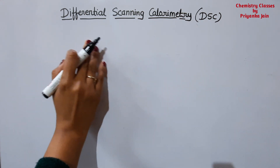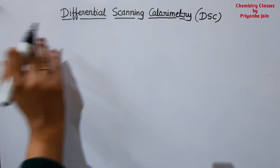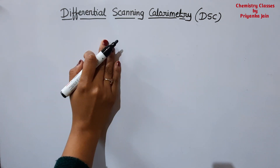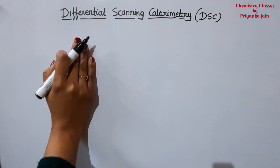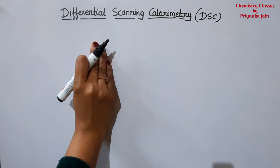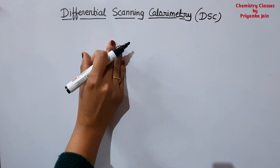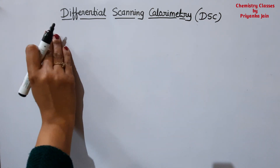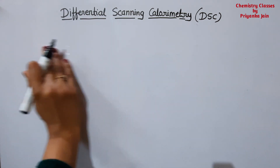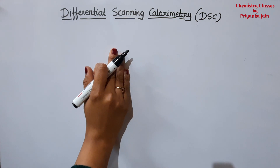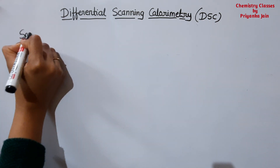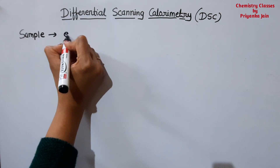What is the difference between DTA and DSC? In DTA we observe the temperature difference between the sample and the inert compound during the thermal process. But in DSC, throughout the whole process we have to keep the temperature constant — both for the sample and for the inert reference compound, the temperature difference ΔT must remain zero.